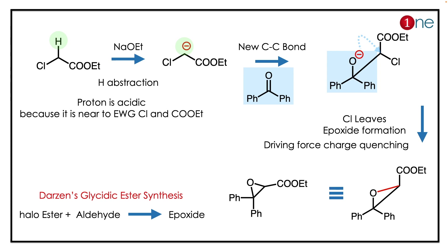Then nucleophilic addition occurs — a new C-C bond forms, an O⁻ is present, and chlorine acts as a good leaving group. What really happens is epoxide formation. The reaction is peculiar because it is dictated by both the leaving group ability and the acidity of the proton.